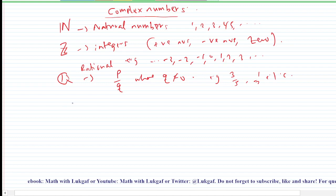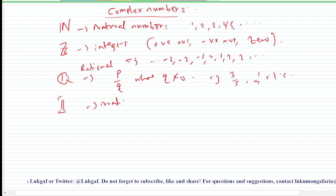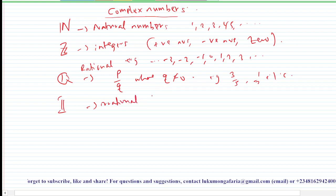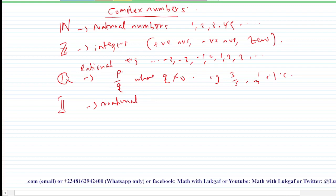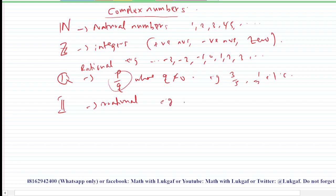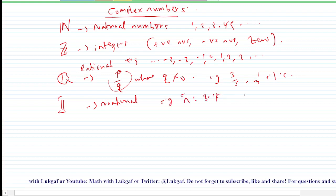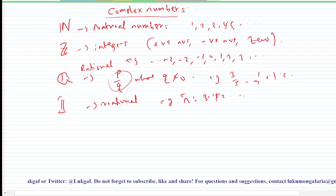Numbers that could not be written in the form of p divided by q are said to be irrational numbers. Those are numbers that could not be written in that fraction form. For example, pi — your pi is equal to 3.14 and you can see that you cannot express it in terms of a fraction.